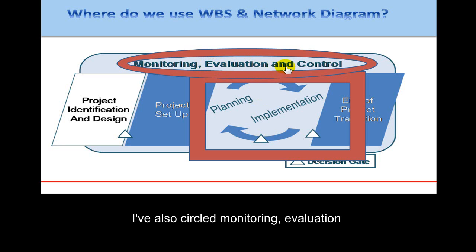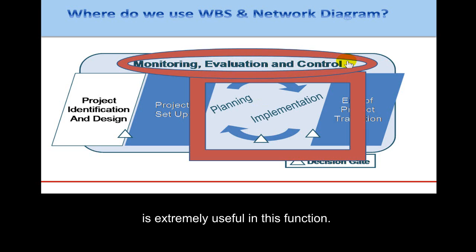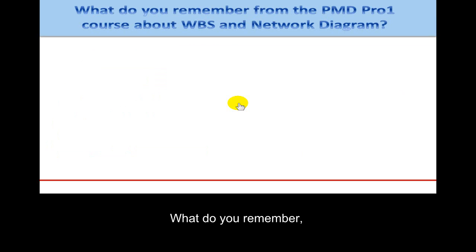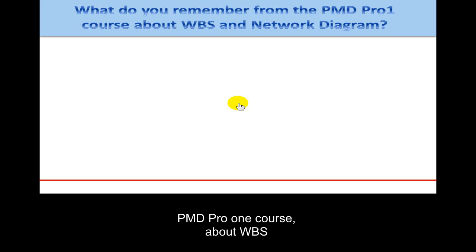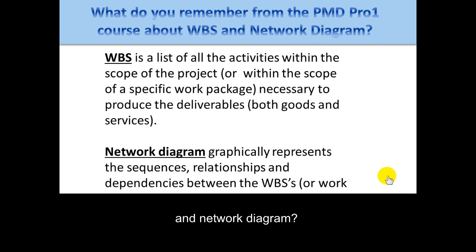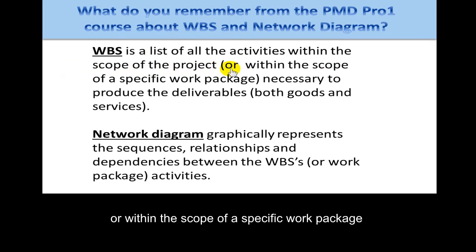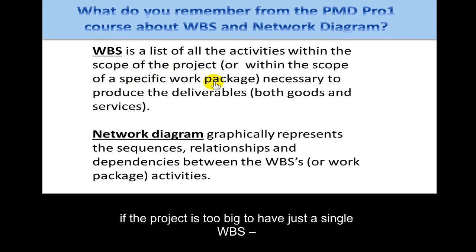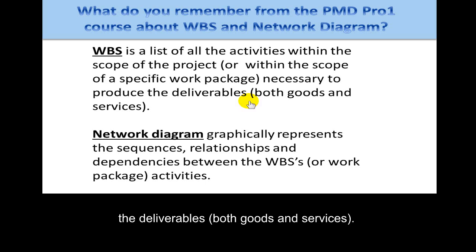I've also circled monitoring, evaluation, and control because the Work Breakdown Structure is extremely useful in this function. The WBS is a list of all the activities within the scope of the project, or within the scope of a specific work package if the project is too big to have just a single WBS — all of the work necessary to produce the deliverables, both goods and services.